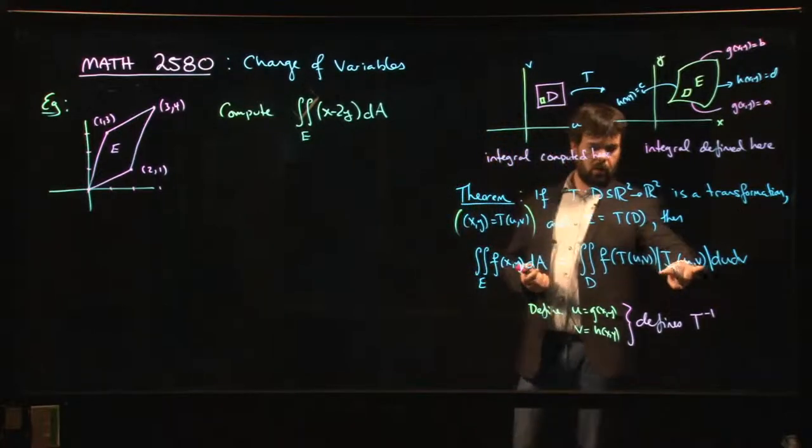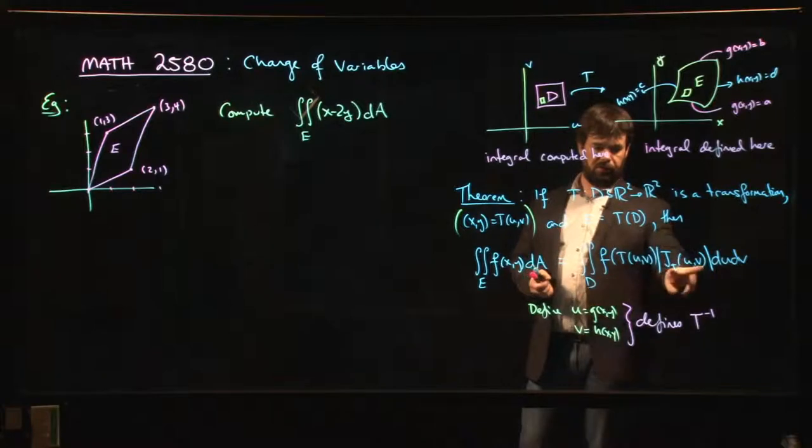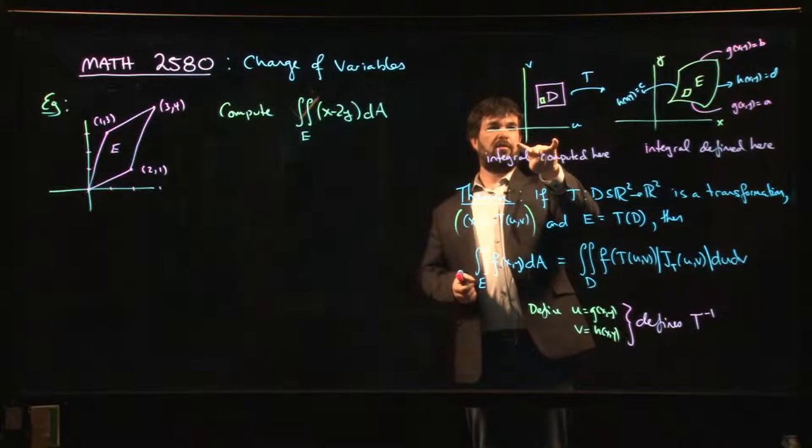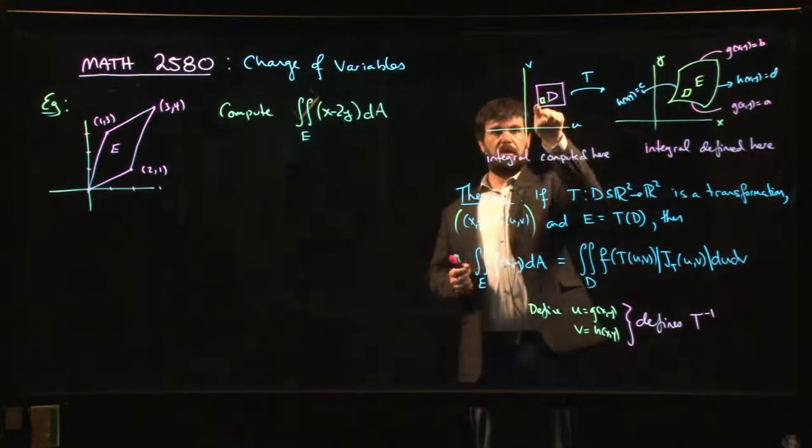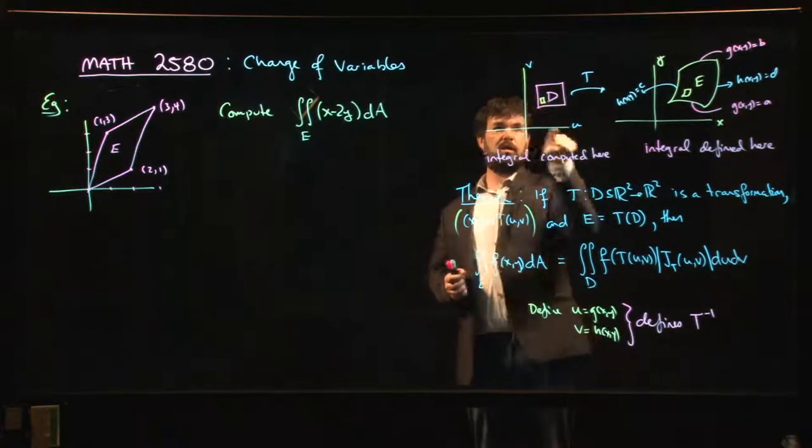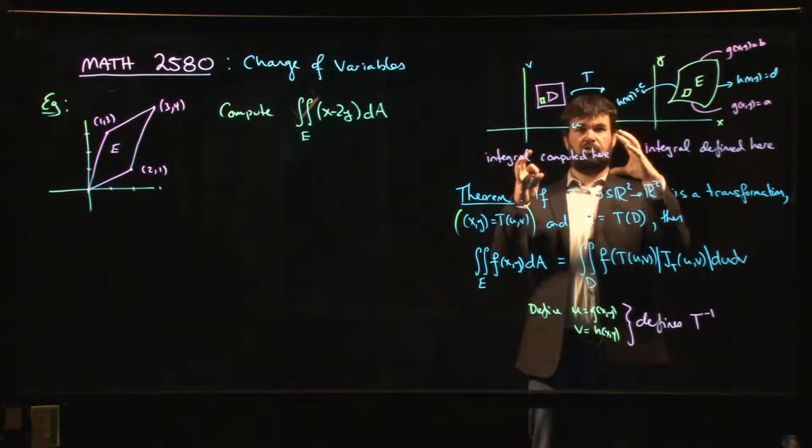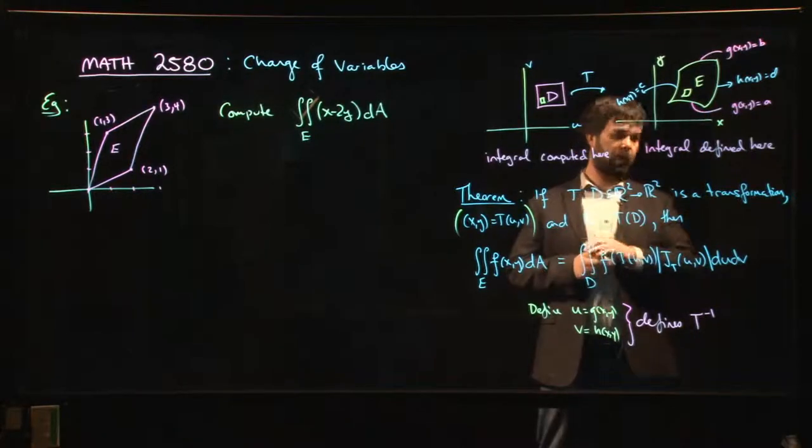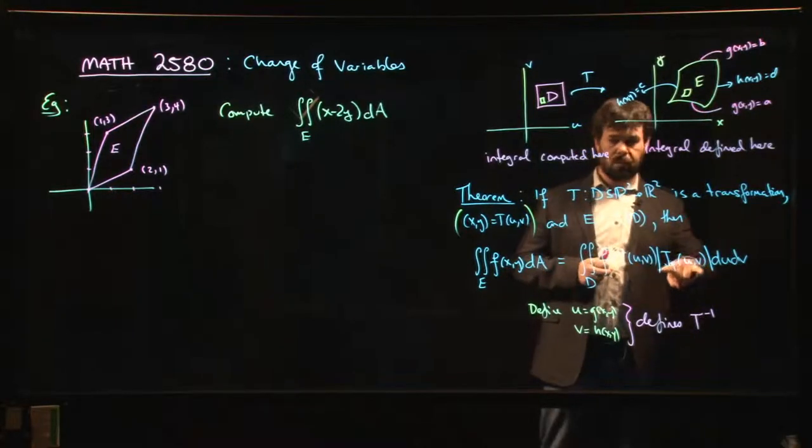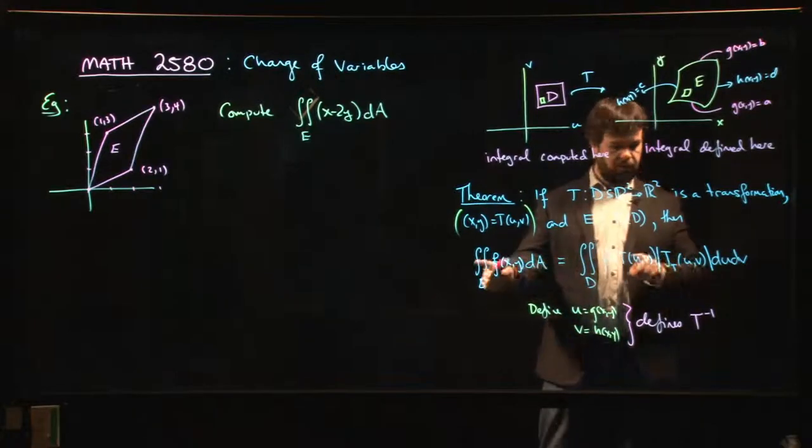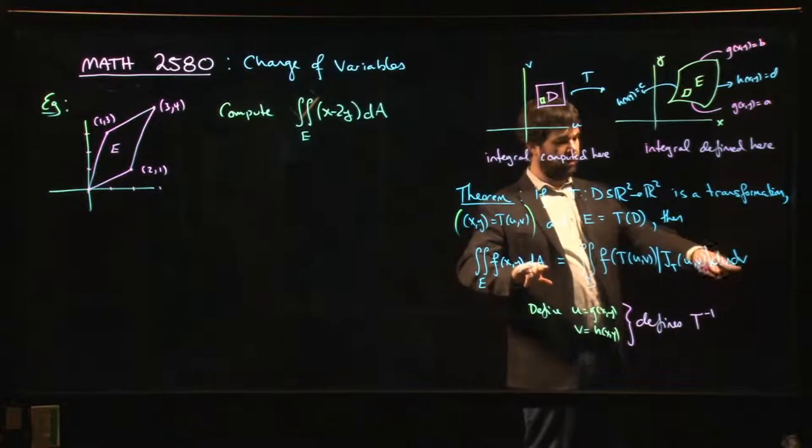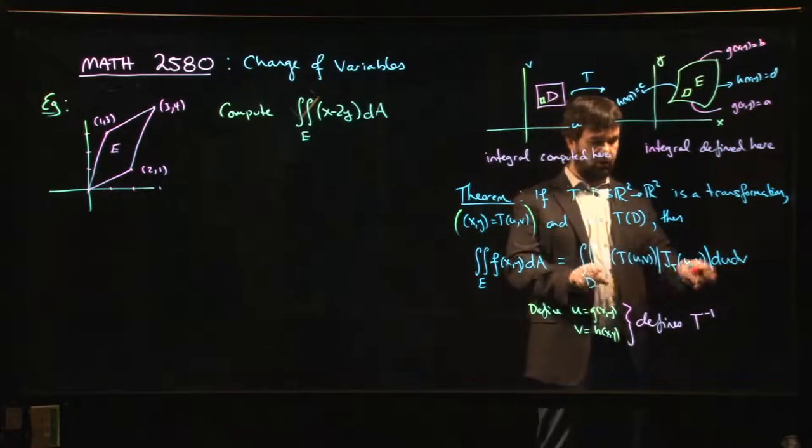Now the way you want to understand this change of variables formula is that you're going to start over here in the UV space. You're going to apply a transformation. Each little bit of area over here in the UV space is going to be stretched or shrunk by a certain factor to produce a little bit of area over here in the XY space. The stretch factor is the Jacobian.